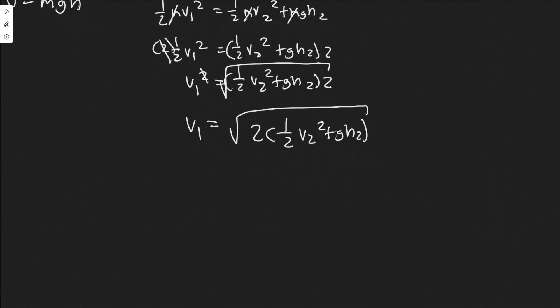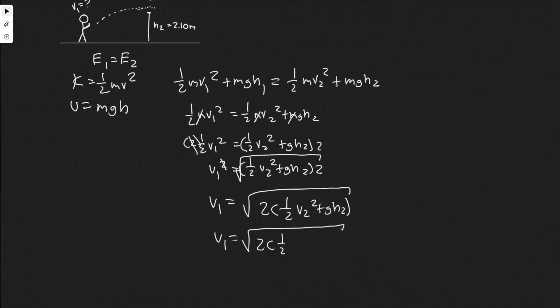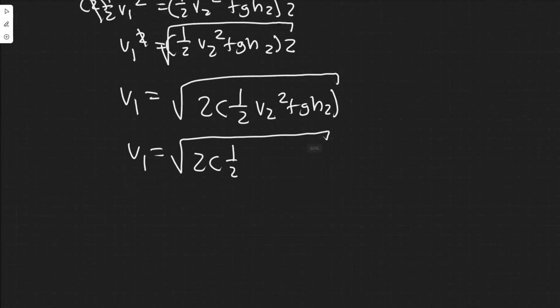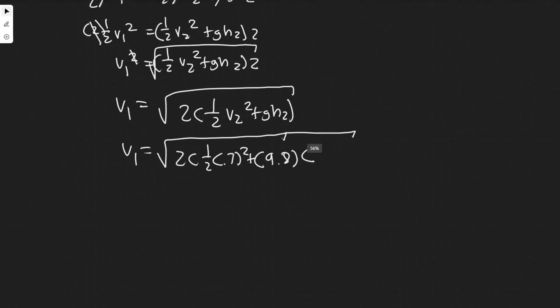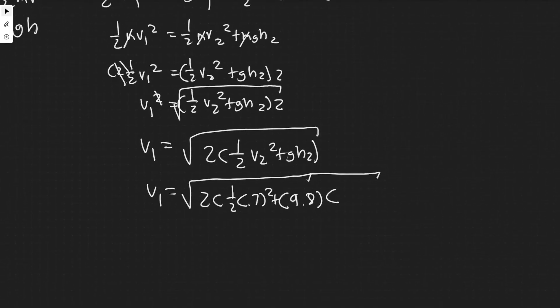And now, it's just a matter of plugging in the actual value. So, V1 equals the square root of 2 times 1 half. They tell us the velocity. The second part is 0.7 meters per second. So, 0.7 squared plus G, which is just the gravitational or acceleration due to gravity, 9.8, times H2, which was 2.1. So, plugging that in, 2.1. And now, it's just a matter of plugging it into our calculators.